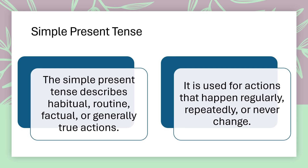Simple present tense describes habitual, routine, factual or generally true actions. It is used for actions that happen regularly, repeatedly, or never change.